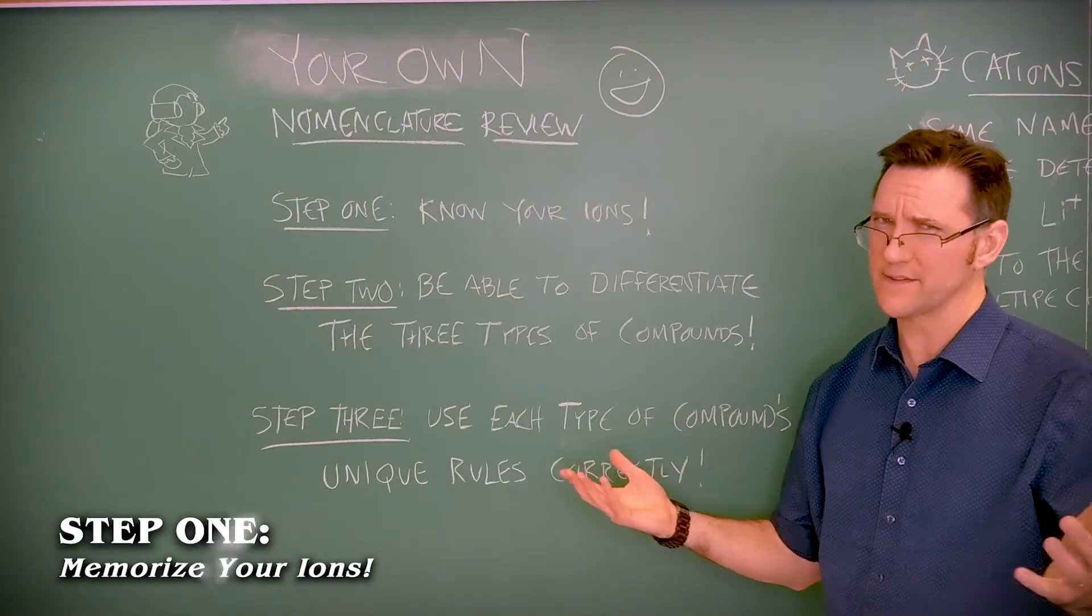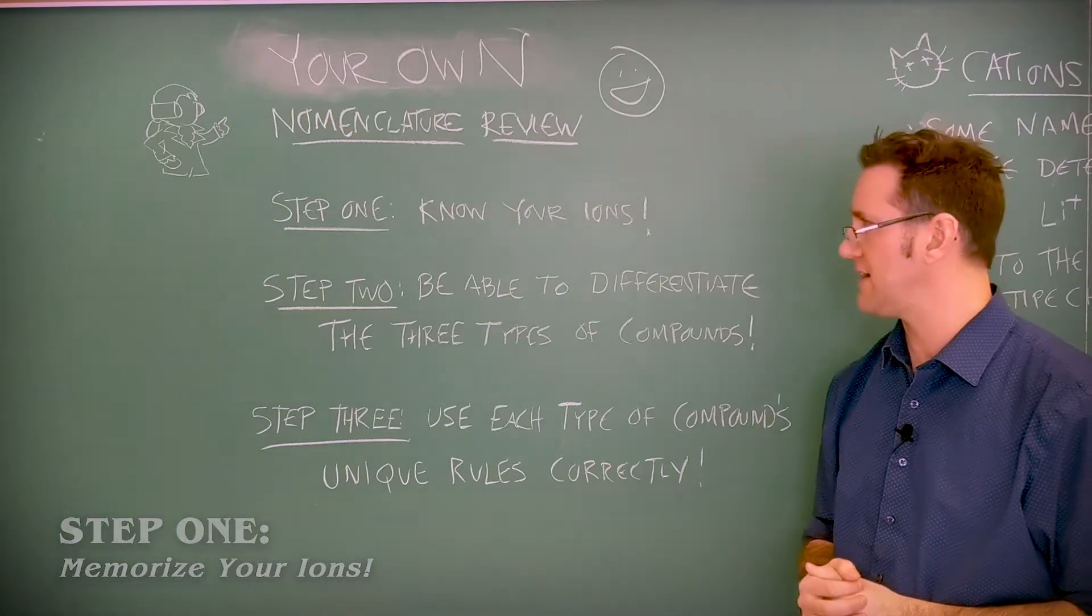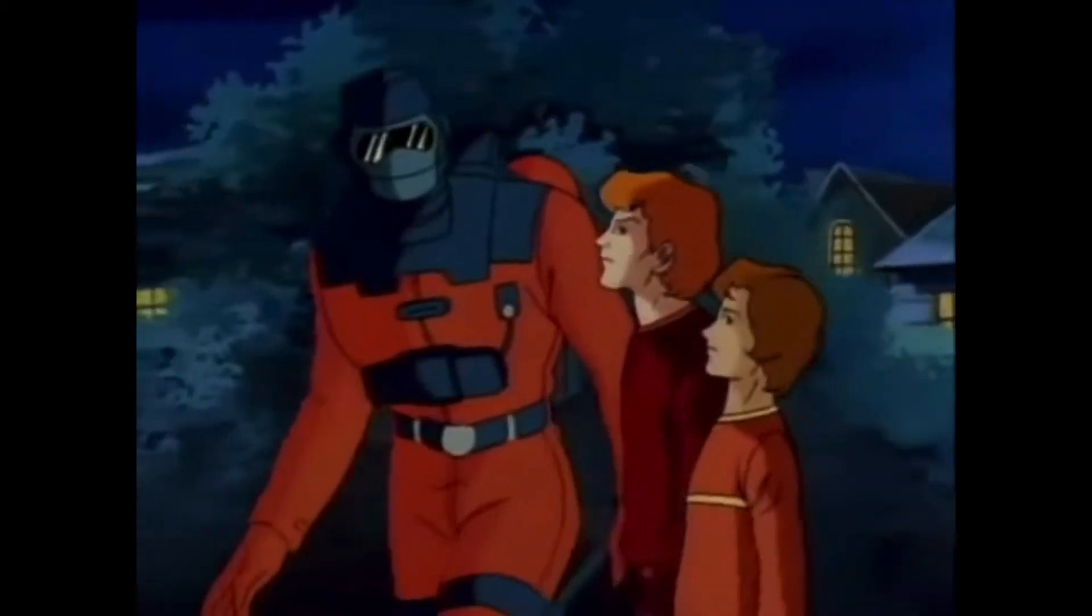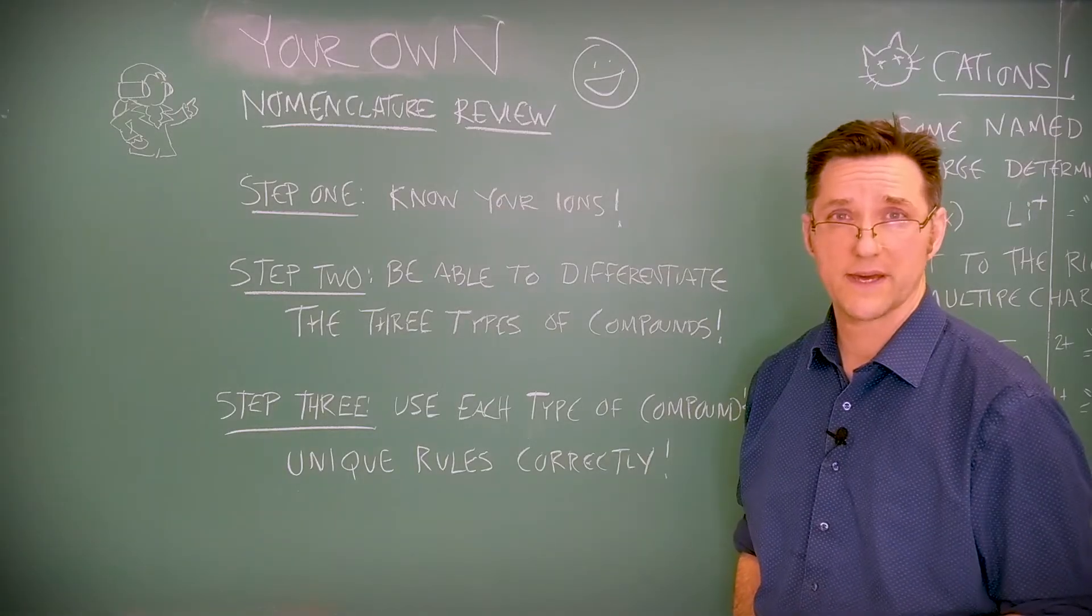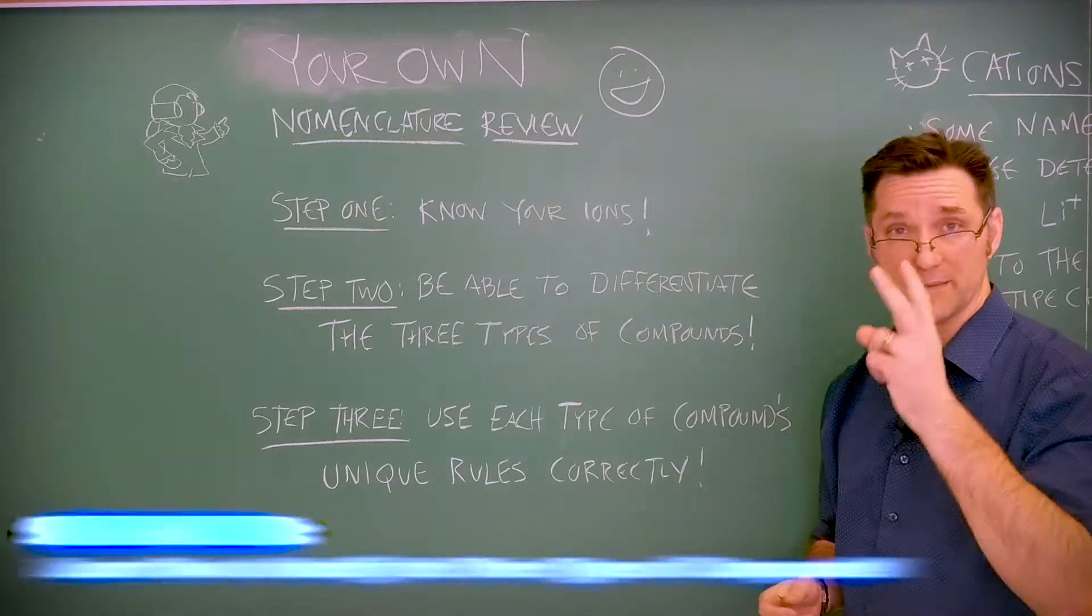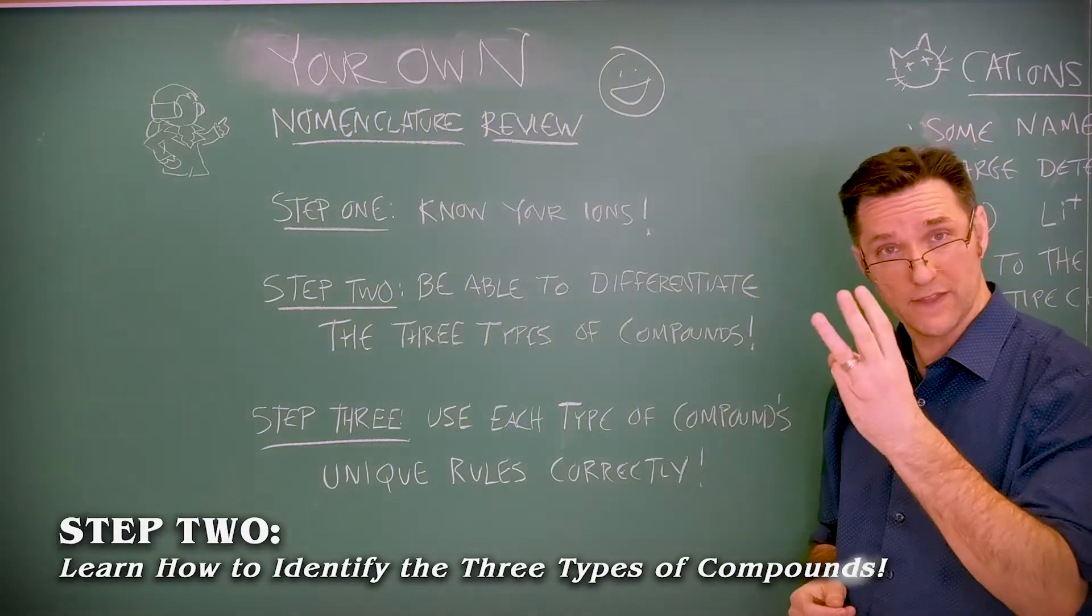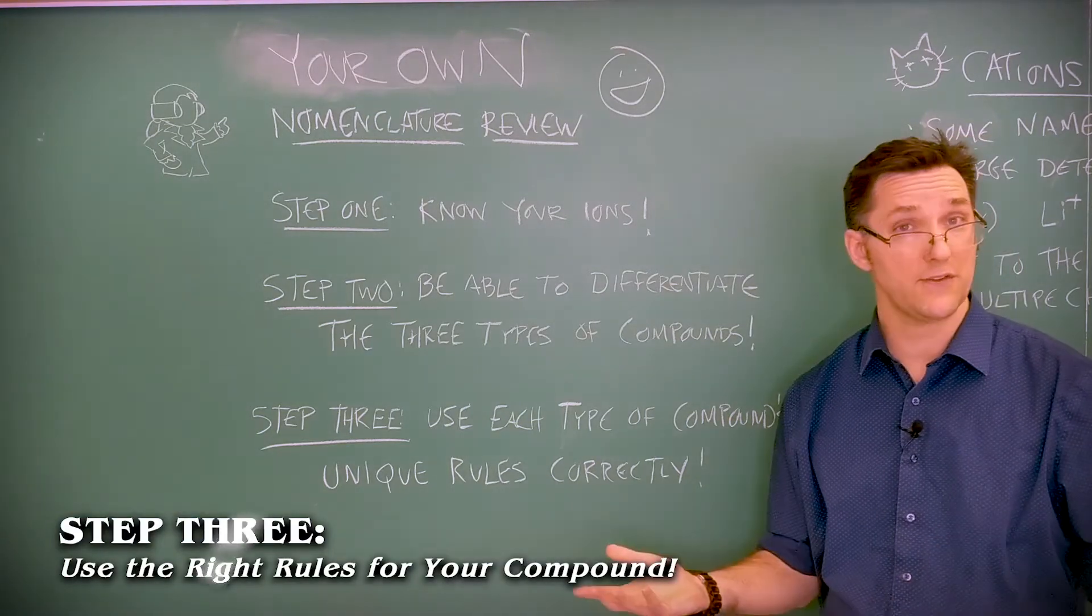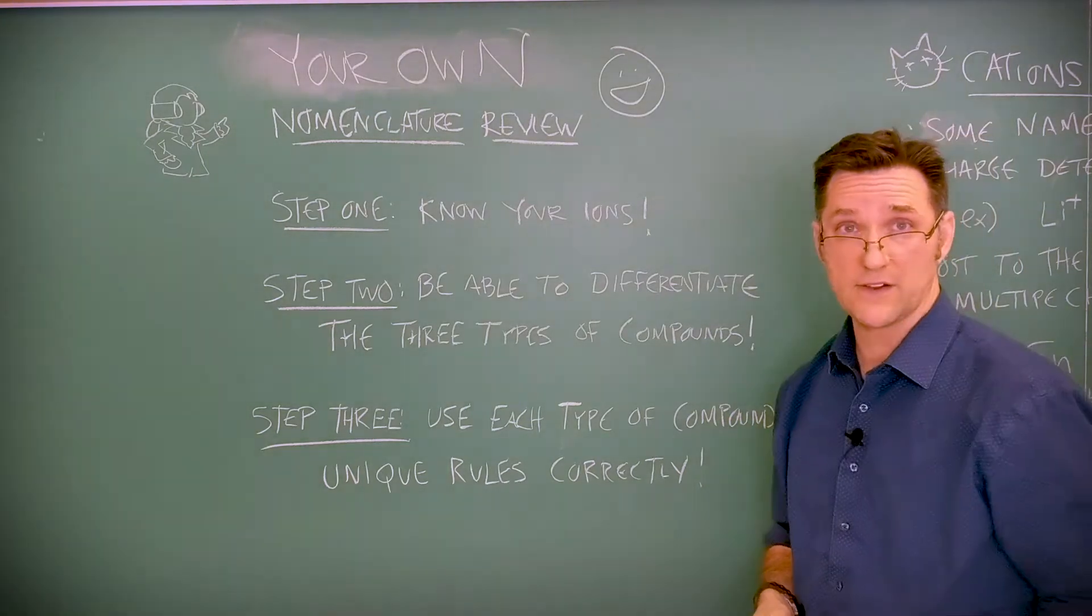So step number one, know your ions. This is pretty much the biggest problem students have. But once you know your ions, that's half the battle. Step number two, be able to differentiate the three types of compounds. And then step number three, make sure you know the rules for each of the compounds. That's it. So let's go. Let's learn.